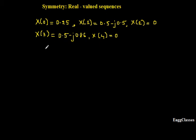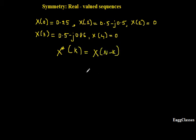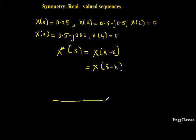To solve this, the symmetry property comes into picture. The property says x*(k) is nothing but x(N minus k). Since this is an 8-point DFT, I would write x(8 minus k). To understand this, I will draw a straight line with N equal to 8, because I am finding an 8-point DFT.